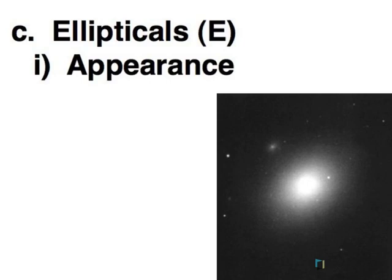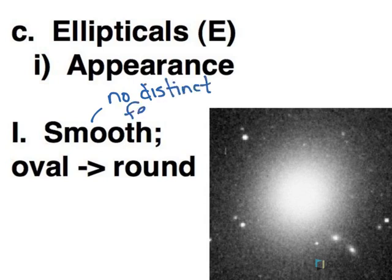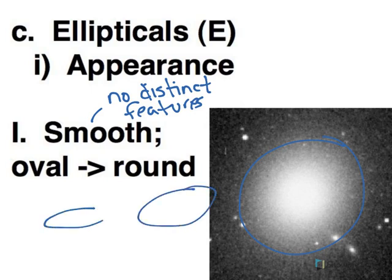In terms of appearance, there are some key characteristics to ellipticals besides just the shape. Certainly smooth looking, there's like no distinct features when you're looking at an elliptical galaxy. And shape-wise, you're looking at shapes that are round to oval in shape. They can be quite oval in shape, so very nondescript.